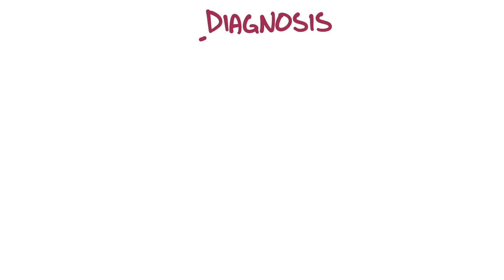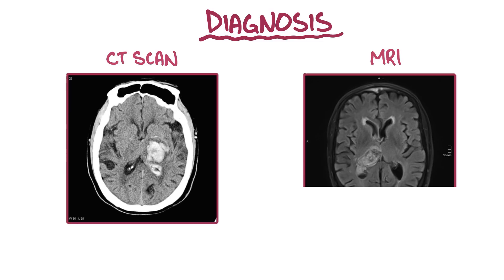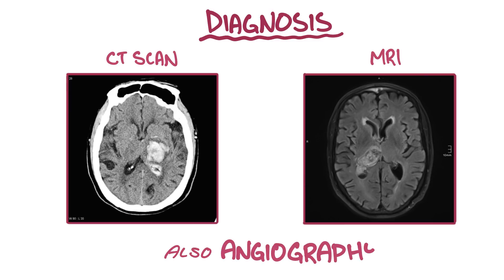To diagnose and confirm the location and size of a hemorrhagic stroke, medical imaging with a CT or MRI can be used. Also, angiography, which uses contrast injected into the blood, can help to visualize the exact location where blood accumulates in the brain tissue.